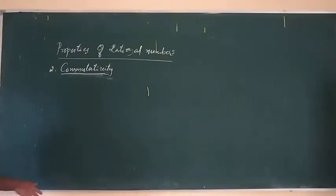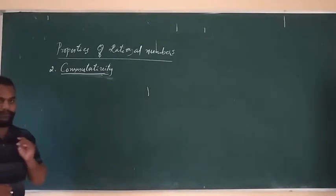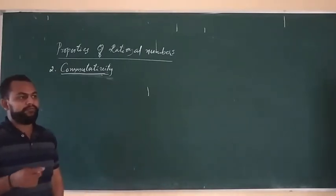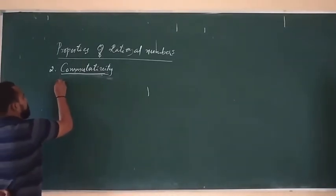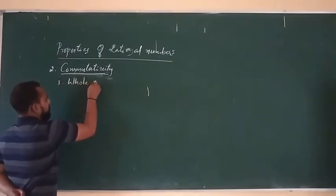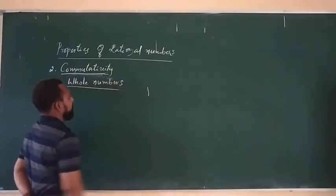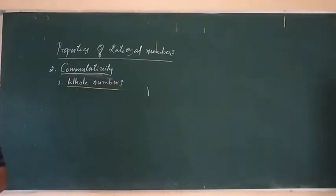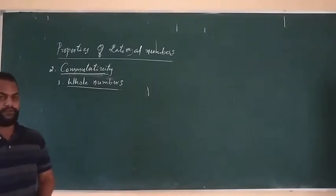The commutative property of the four operations — the first one is for whole numbers. The whole numbers start from zero; all the positive numbers together with zero are called whole numbers.